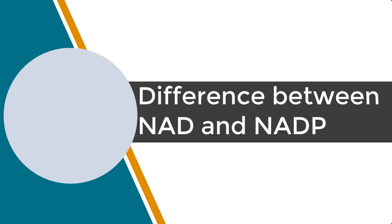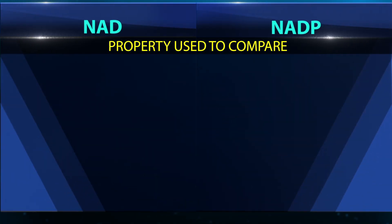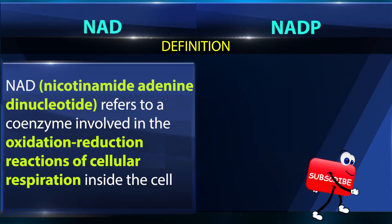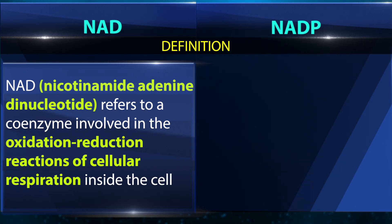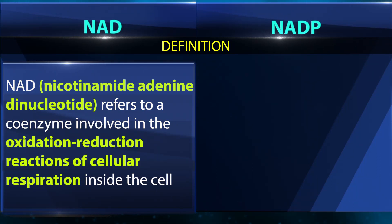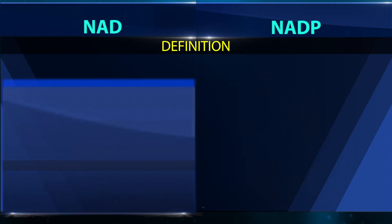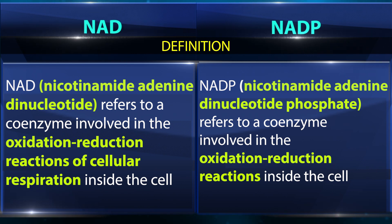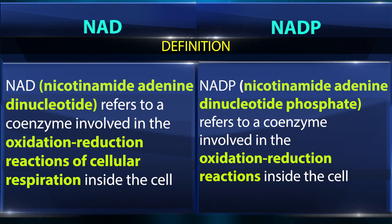NAD, nicotinamide adenine dinucleotide, refers to a coenzyme involved in the oxidation-reduction reactions of cellular respiration inside the cell. NADP, nicotinamide adenine dinucleotide phosphate, refers to a coenzyme involved in the oxidation-reduction reactions inside the cell.